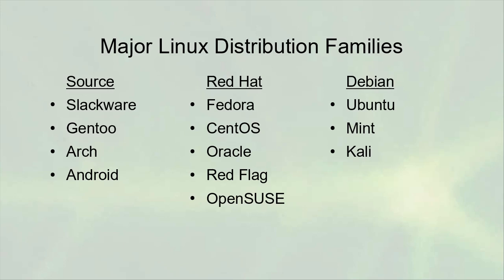So where does CentOS fit in among the distribution families? There are a couple of different major sources of Linux distributions. You've got the source code based Linux distributions that would include things like Slackware, which is one of the oldest. You also have Gentoo and Arch, and even Android is kind of a source code based Linux distribution. Then you have the whole Red Hat family.